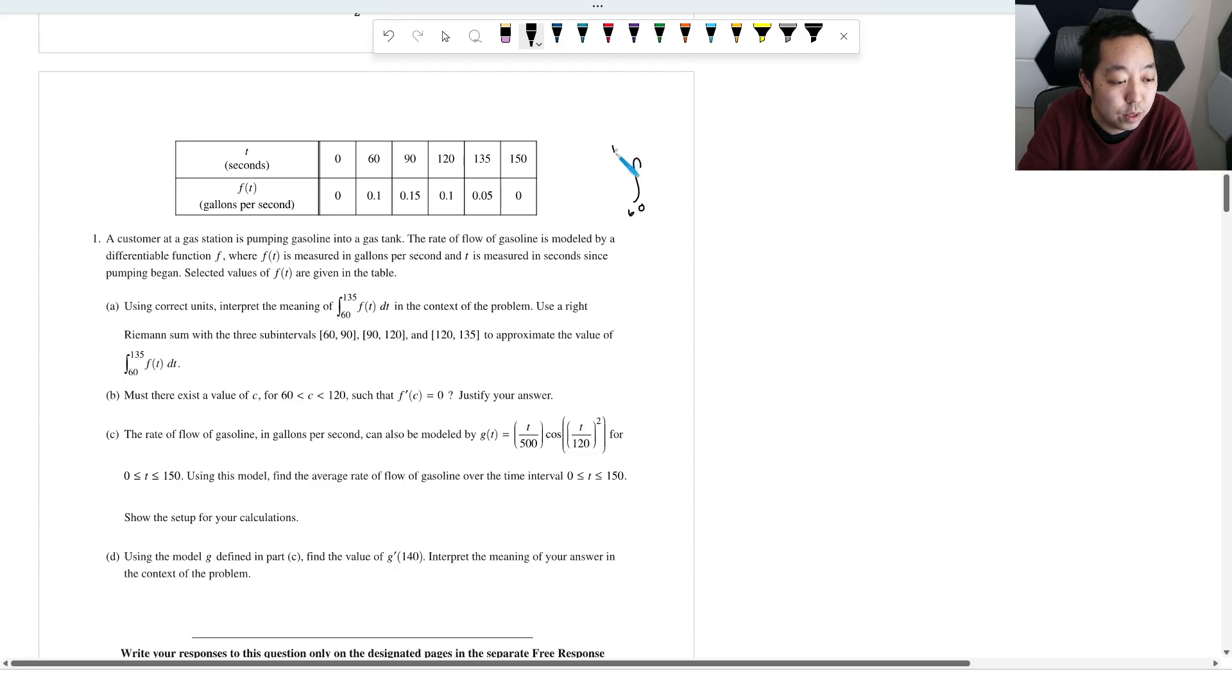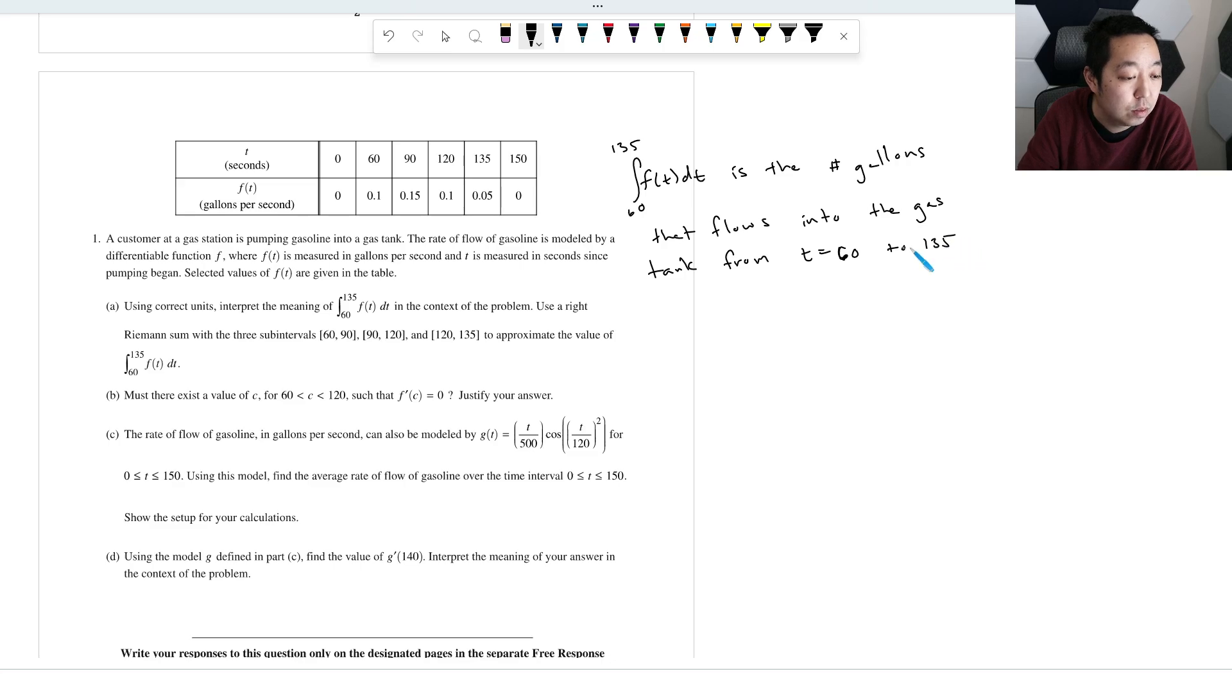So I would say the integral from 60 to 135 of F(t) dt is the number of gallons that flows into the gas tank from t equals 60 to 135 seconds. So just a little bit of interpretation like that.